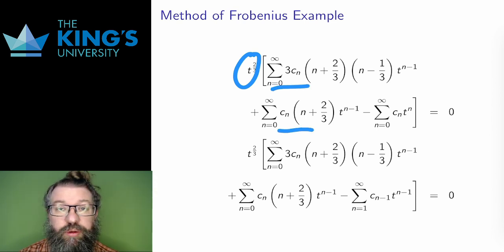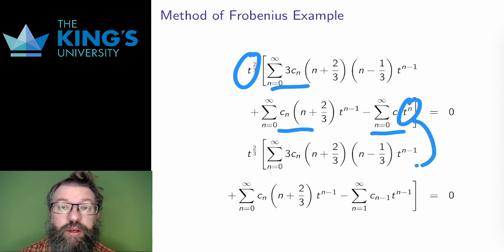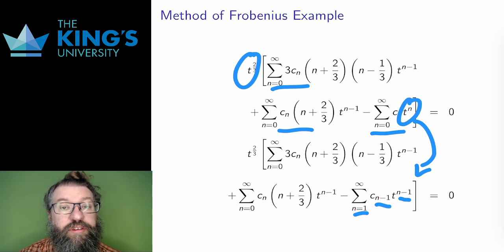Then I'll shift to match exponents as usual. I'm going to shift the last series to make all the exponents n minus 1, which means shifting it down by one in the term and up by one in the bounds. Well, then I have the same powers, but not the same starting bounds. So I'll pull out the first term in the first two series so that everything will start with n equals 1.